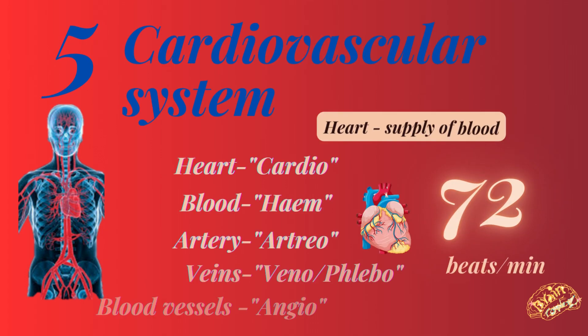Number five: the cardiovascular system. It involves the heart that pumps and supplies blood to all organs. Medical terms related to CVS: heart is 'cardio', blood is 'haem', artery is 'arterio', veins are 'veino' or 'phlebo', and blood vessels are 'angio'. The normal heart rate is approximately 72 beats per minute.